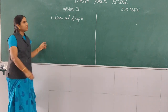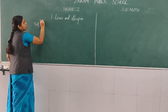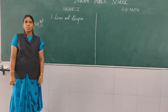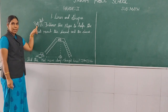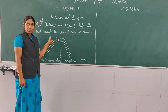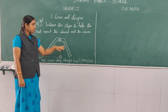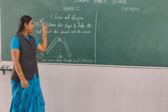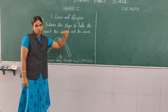Have you done the activity in standard one, children? Yes. So here also we are going to see the hands-on activity 1.1. Okay children, see this picture. Listen: follow the shapes to help the rat reach the biscuit and the cheese.